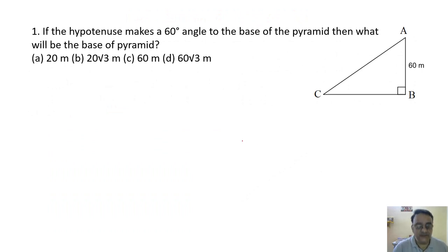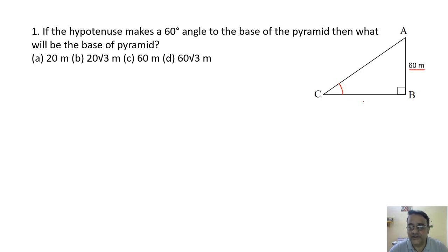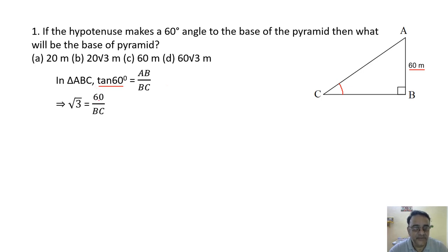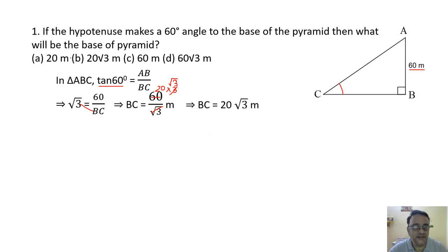Question 1: If the hypotenuse makes a 60° angle to the base, find the base. AB = 60m, angle = 60°. Using tan 60° = AB/BC: √3 = 60/BC, so BC = 60/√3 = 20√3. The correct option is option B.